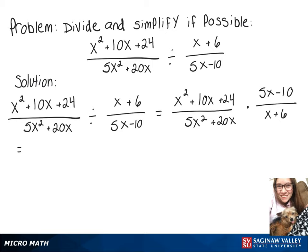So now putting that into one fraction, we'll have x squared plus 10x plus 24 times 5x minus 10 over 5x squared plus 20x times x plus 6.